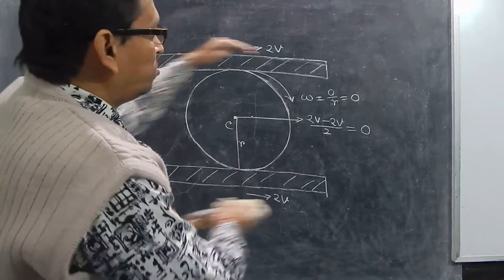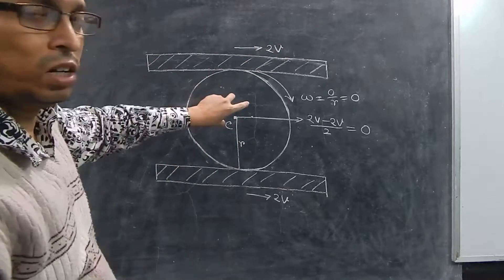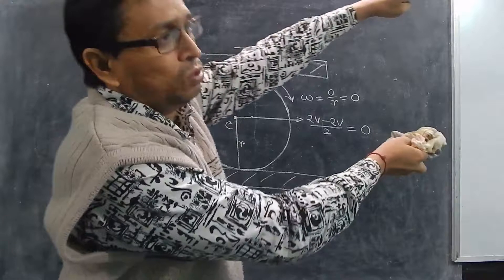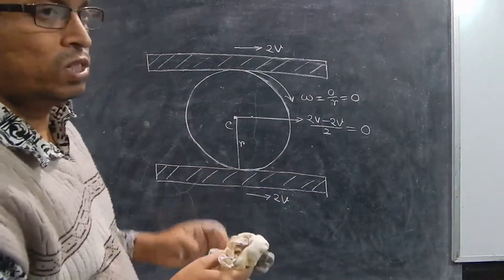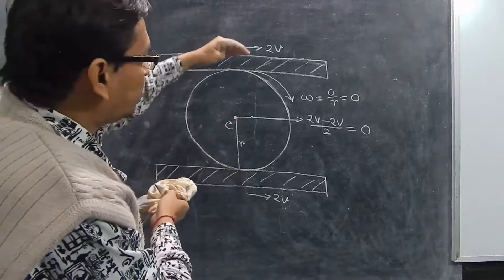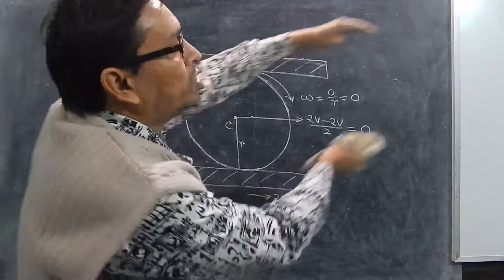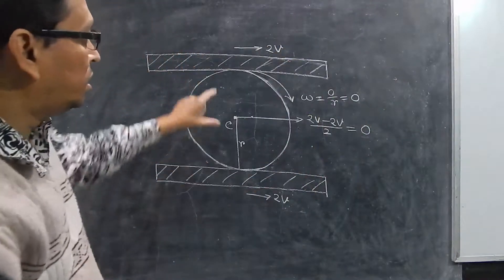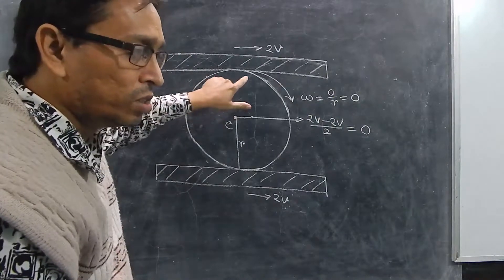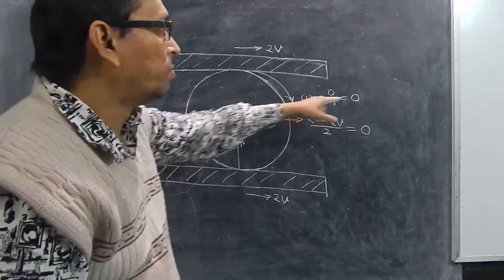If two planks are moving with the same velocity, the disc will not rotate and it will not roll — so it will be static. The total system will move with velocity 2V. Someone standing outside will see both planks and the cylinder inside moving with velocity 2V, but the disc or cylinder will not roll — it will be static — and that is why its omega is 0.